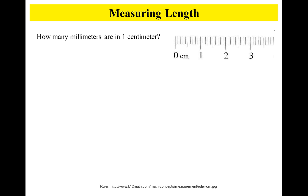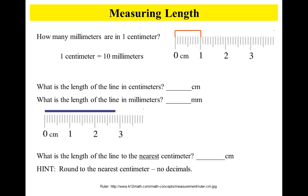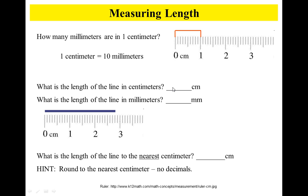How many millimeters are in one centimeter? One centimeter has ten millimeters in it. What is the length of the line in centimeters? This is one centimeter, two—is it all the way to three? No, it's two point eight centimeters. Each one of these little lines is a millimeter. Count how many lines that is, and that's how many millimeters it is. If we wanted to round this line, does it round to two centimeters or three centimeters?